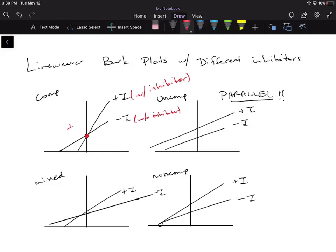Remember, we said that the Y intercept is going to be 1 over Vmax, and then our X intercept is going to be negative 1 over Km, and then this is going to be another negative 1 over Km, but this is when you add the inhibitor.